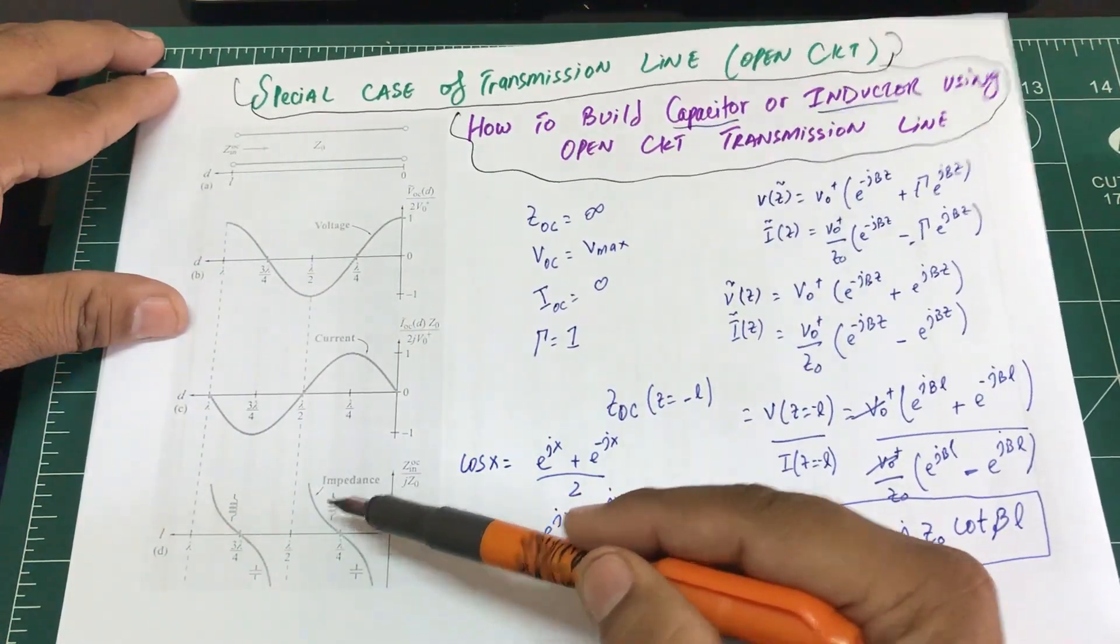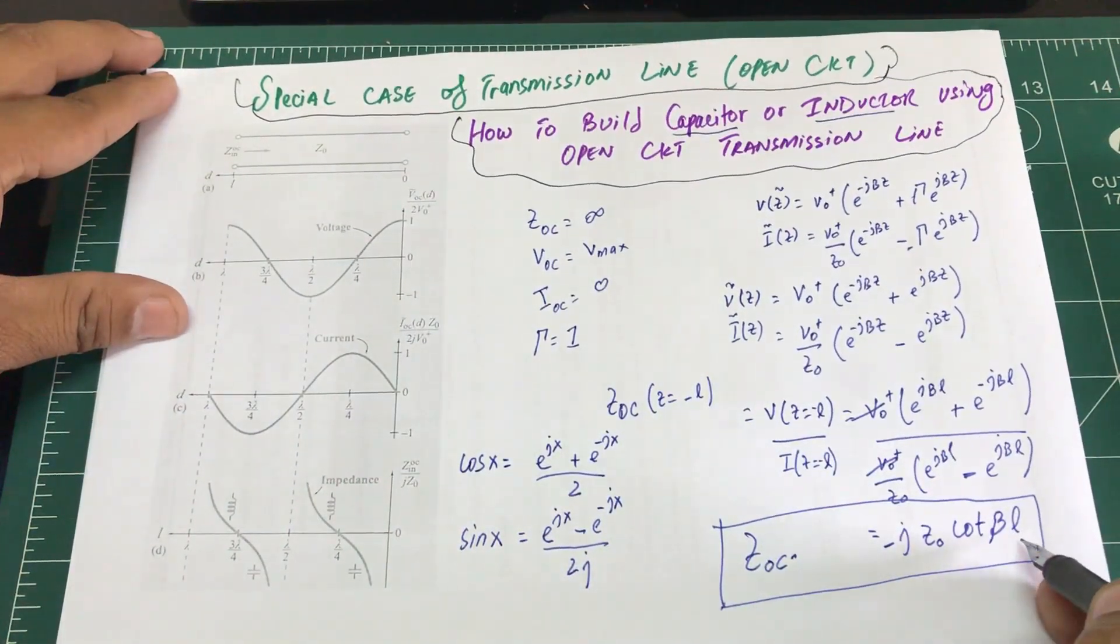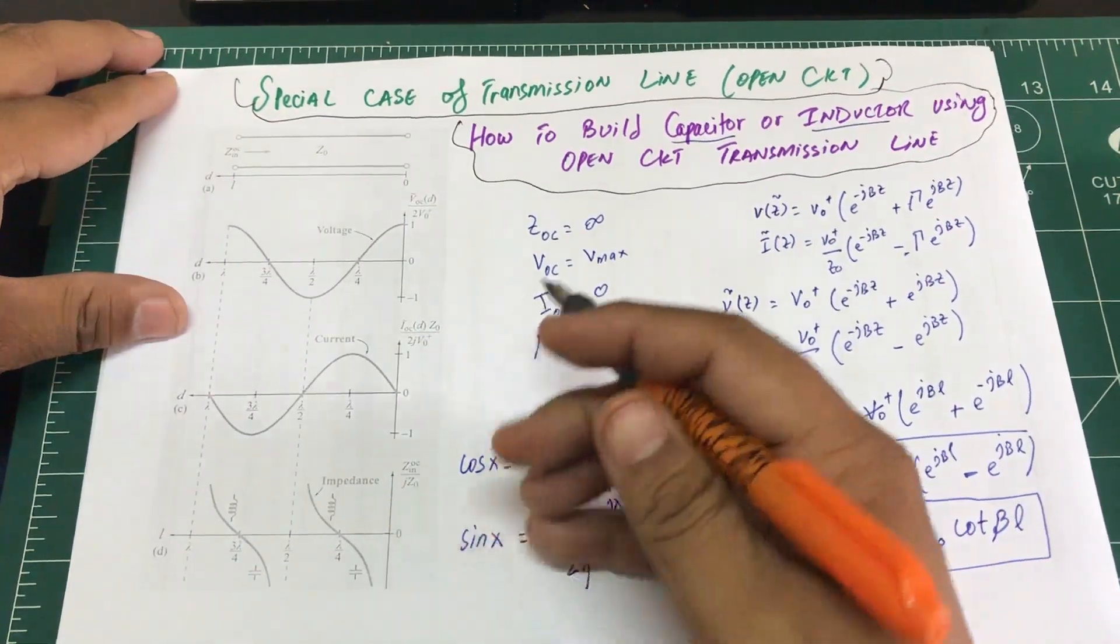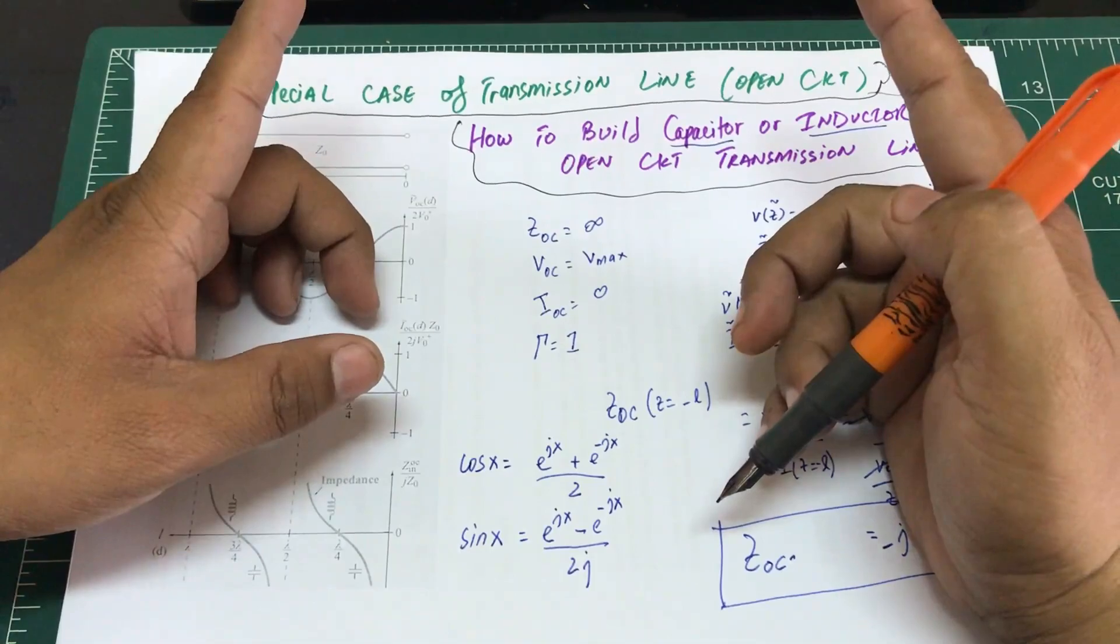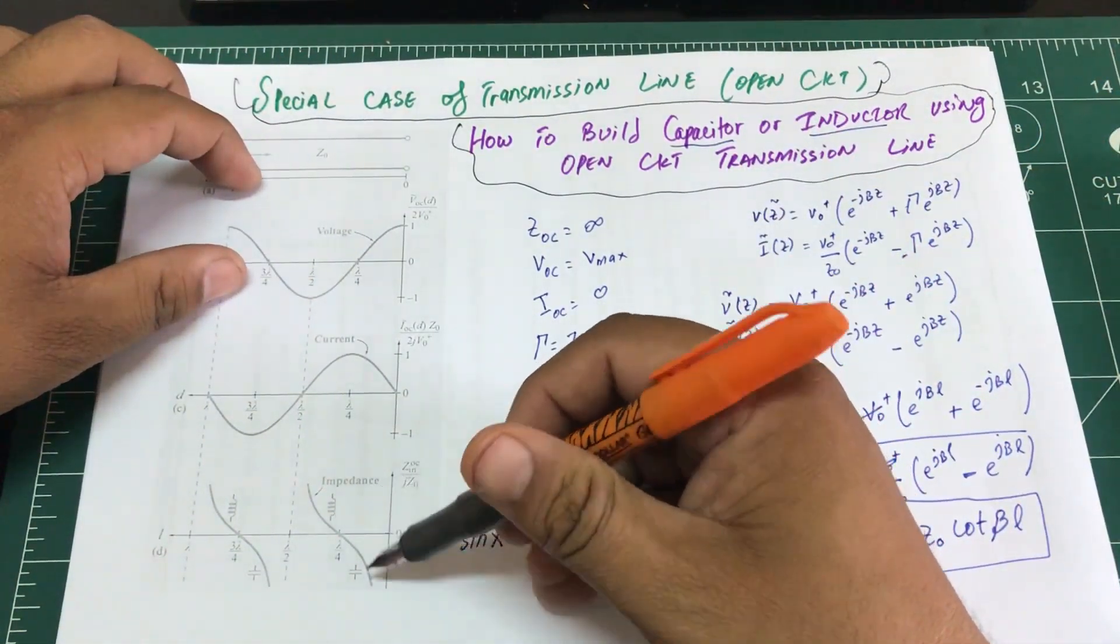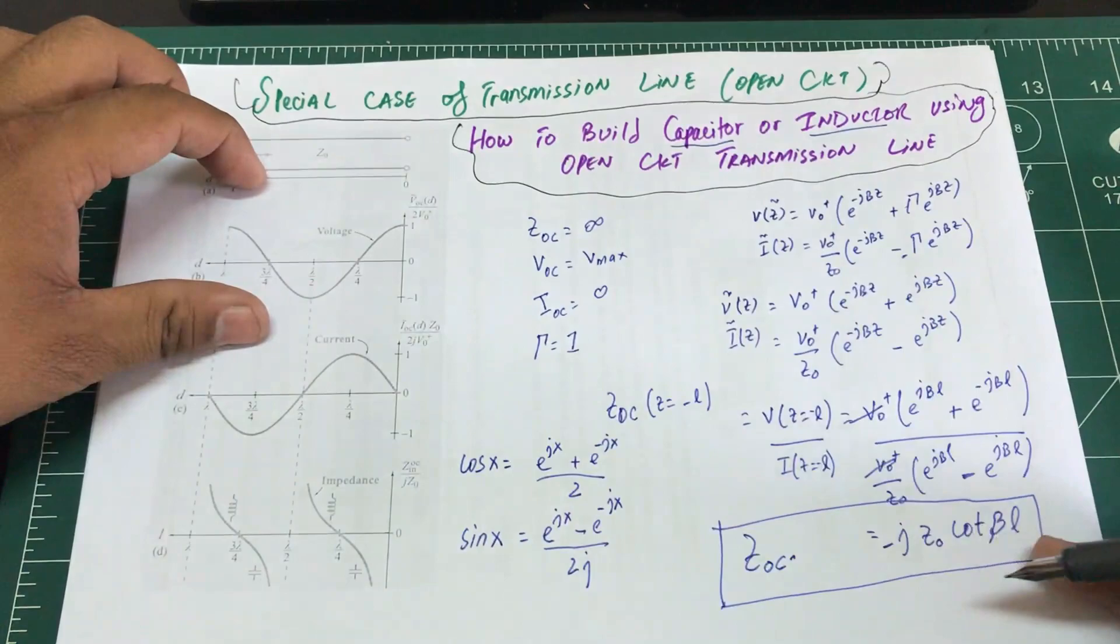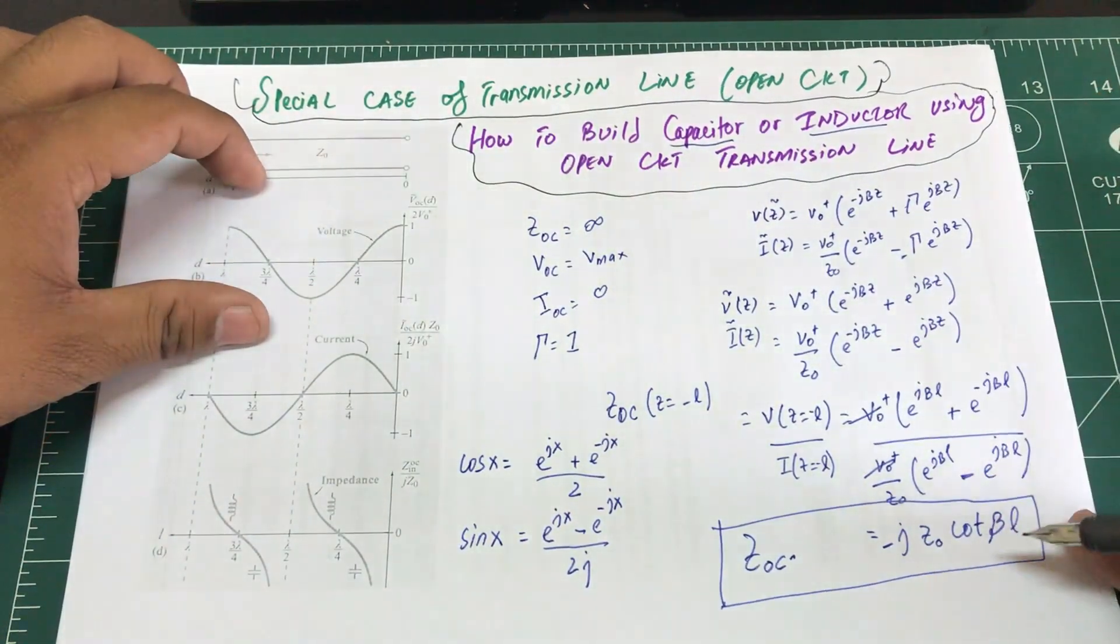By simply solving for L, I can find out how much length I need to have for my microstrip transmission line to either act as an inductor or act as a capacitor, based on the definition which we have just derived.